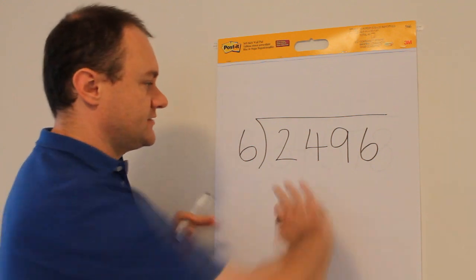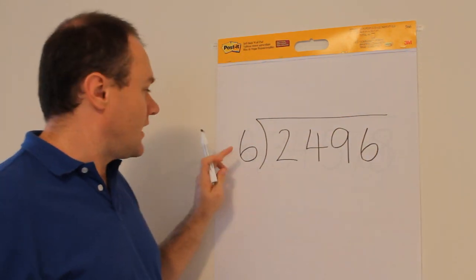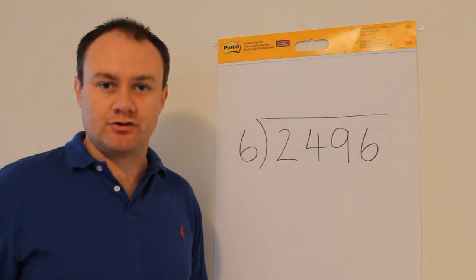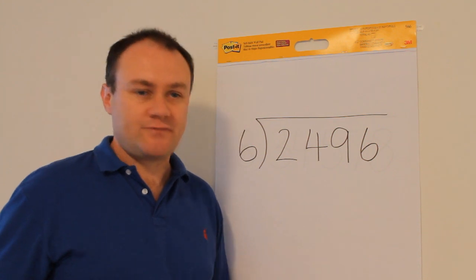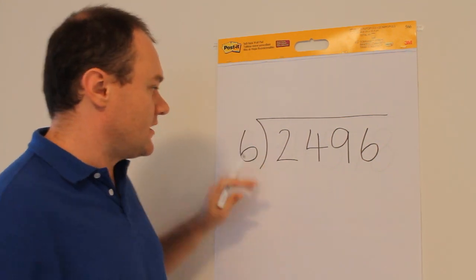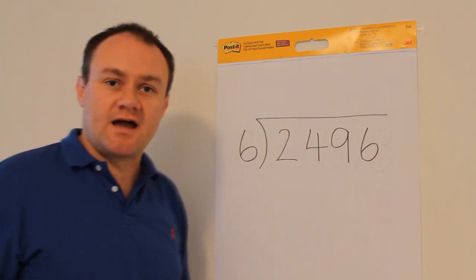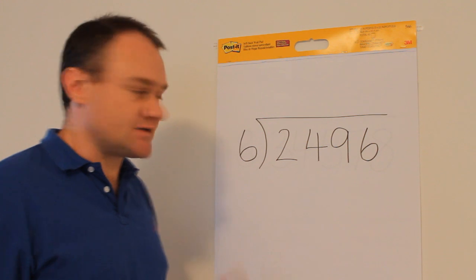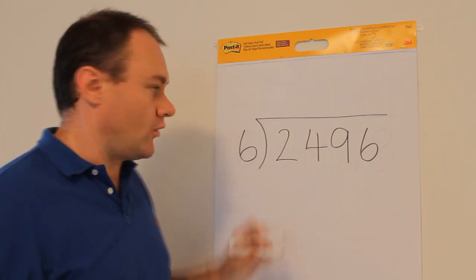As with before, mentally I cover up everything except for the two to begin with. How many times does six go into two? Well, none. It's obviously too big to go into two any time at all. So I then look at it with this next digit now. I now look at the two and the four as a 24 and say how many times does six go into 24.